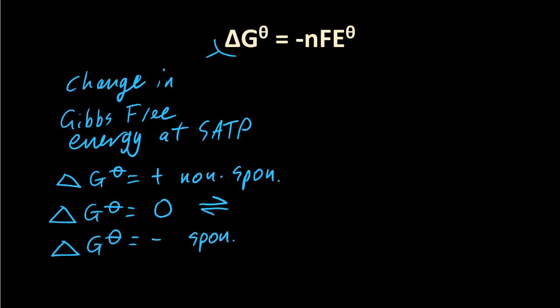Spontaneous means that the forward reaction is possible. You might have to add some extra energy to get over the activation energy, but the reaction will happen. N is the number of moles of electrons in the balanced equation. And you're thinking what equation? Well, it's the equation that's going to produce the voltage E cell. So it's the equation for the cell.